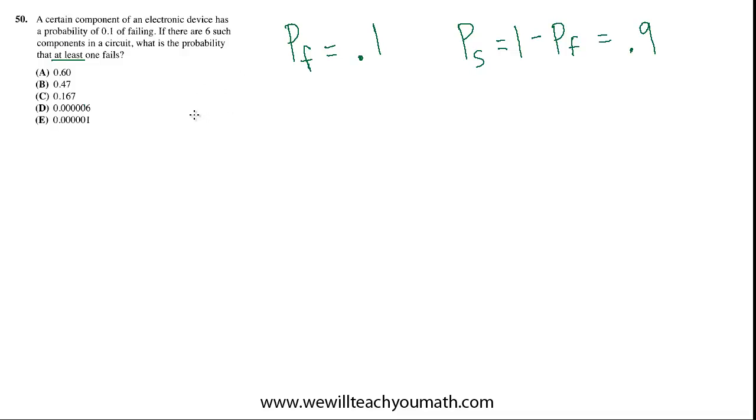So, we could say the probability of at least 1 fail equals 1 minus the probability of no failures. No failures.